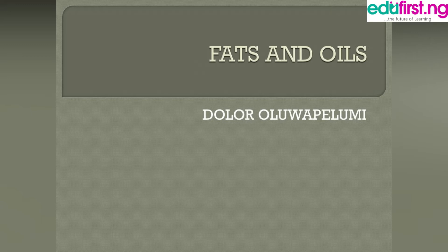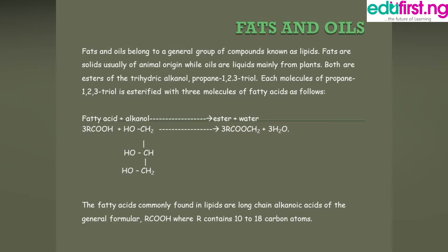Welcome to class. Today we'll be studying fats and oils through chemistry. Fats and oils belong to a general group of compounds known as lipids. Fats are solid and usually of animal origin — this can be seen from animal meat like chicken or beef. Oils are liquid and mainly from plants.